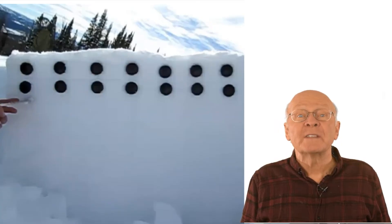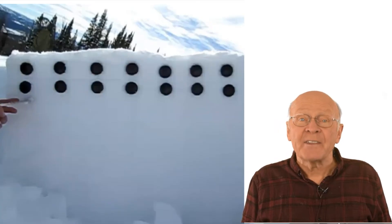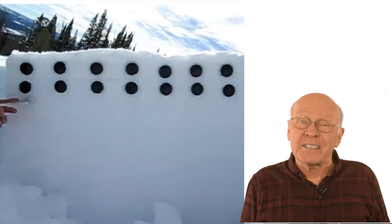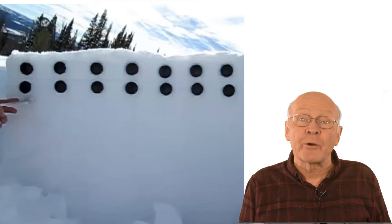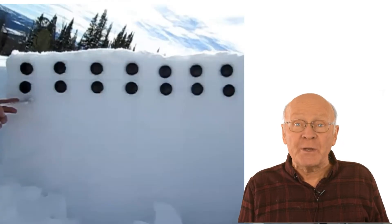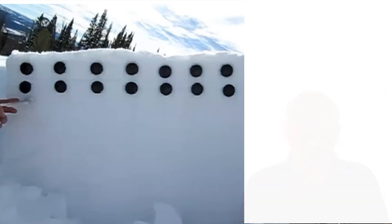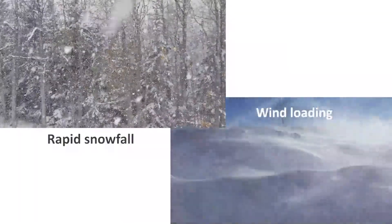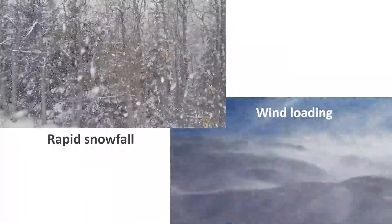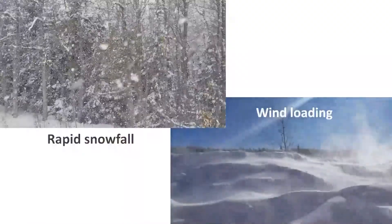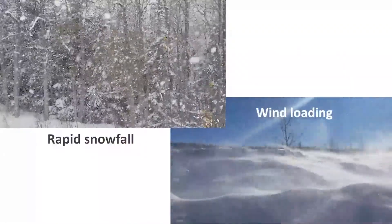This look inside the snowpack shows us that an unstable snowpack has a shorter critical crack length, at least for weak layers that are not too deep. Recent rapid loading by snowfall or wind loading will shorten the critical crack length, making avalanches more likely.